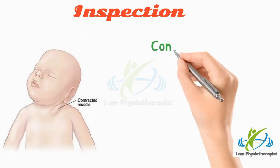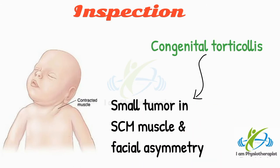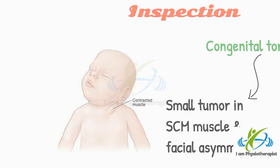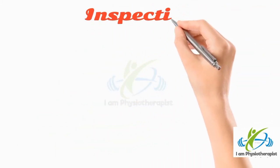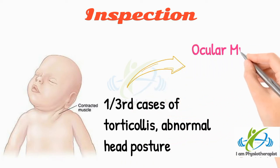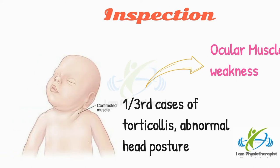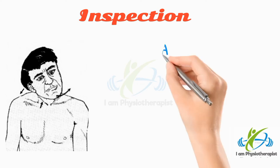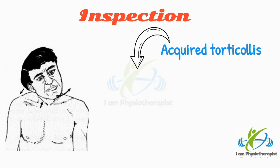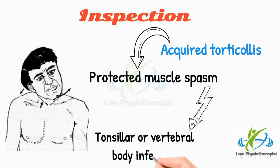In congenital torticollis, there may be a small tumor in the sternomastoid muscle, and facial asymmetry may also be present in some untreated cases. In about one-third of cases of torticollis, abnormal head posture is due to ocular muscle weakness. In acquired torticollis, protective muscle spasm may occur due to tonsillar or vertebral body infection.